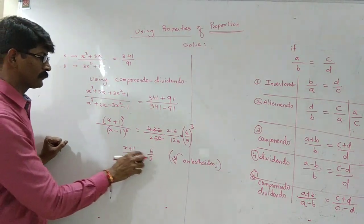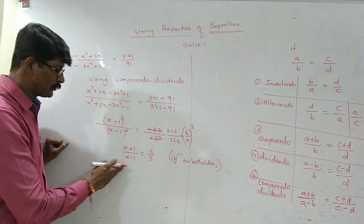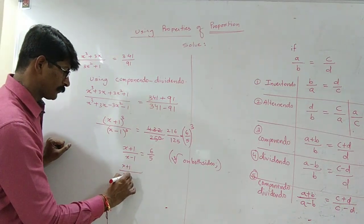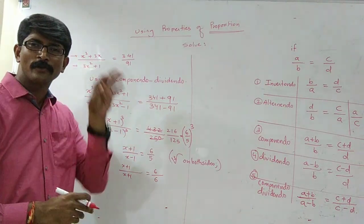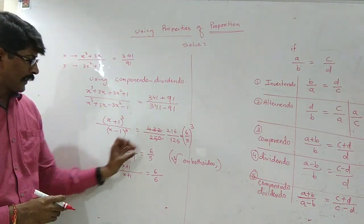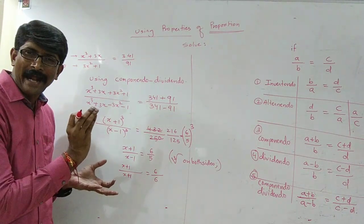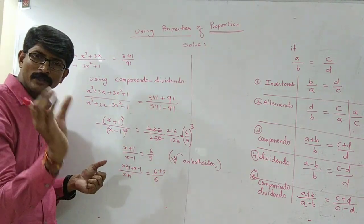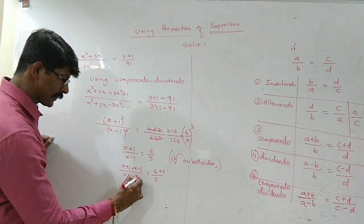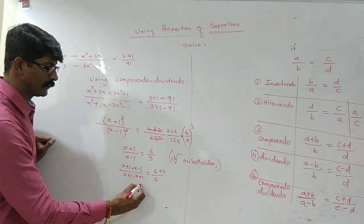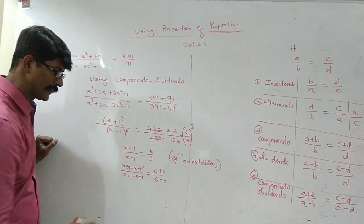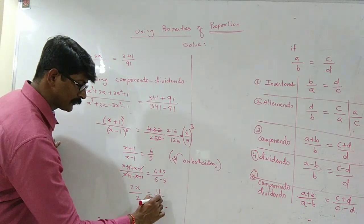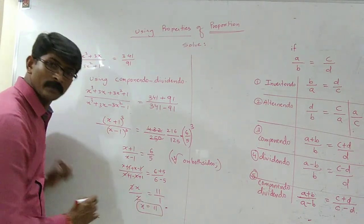Now x plus 1 upon x minus 1 equals 6 upon 5. Some students can do cross multiplication here, or we can apply Componendo-Dividendo again. Copying the numerator two times: x plus 1 and x plus 1 equals 6 and 6. Adding the denominator in the numerator: plus x minus 1 and plus 5. Subtracting in the denominator: minus x, and minus of minus 1 becomes plus 1, and minus 5. So the left side becomes 2x upon 2 and the right side becomes 11 upon 1, giving x equals 11.